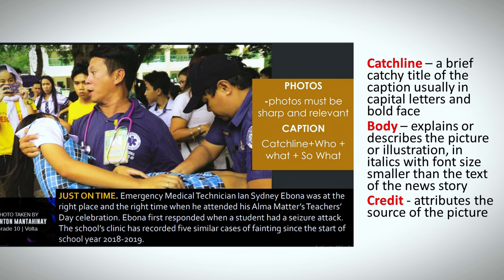How do you write a caption? First, you need the catch line — a brief catch title of the caption, usually in capital letters and boldface. For example, the catch line here is 'JUST ON TIME.' Next is the body: it explains or describes the picture in italics, with a font size smaller than the body text of the news story. When writing the body, follow this pattern: Who, What, So What — and Credit, which means the source or photographer of the picture. In this example, the credit is given to Ancon Mantahinay.